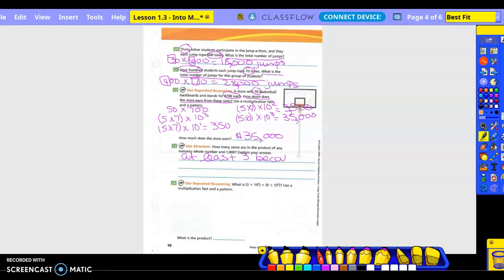At least three because you have what? Three in 1,000. Because 1,000 has what? It has three zeros.